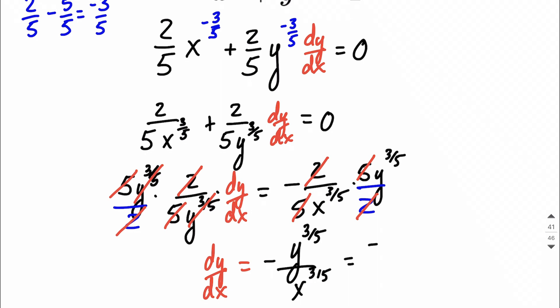If you so chose, you could rewrite this as the fifth root of y to the third power and the fifth root of x to the third power if you wanted to. We could do a little rationalizing on top of that, but that's a pretty good derivative where we are right now with the dy over dx on one side all by itself. So I hope this helps out as you're working on implicit differentiation and finding those derivatives. Good luck.